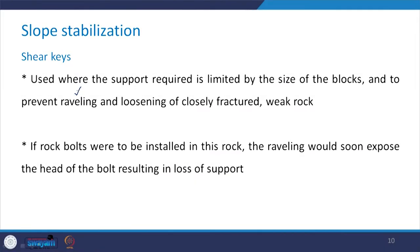Shear keys are used where the support required is limited by the size of the blocks, and to prevent raveling and loosening of closely fractured weak rocks. This provision of shear keys is helpful in preventing raveling. If rock bolts were installed in this type of rock, the raveling would soon expose the head of the bolt, resulting in loss of support. Therefore, shear keys are more useful in such cases.